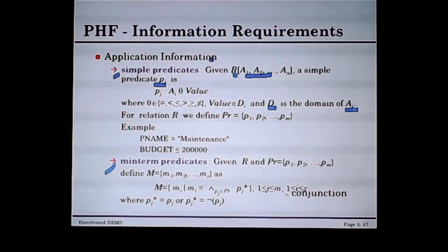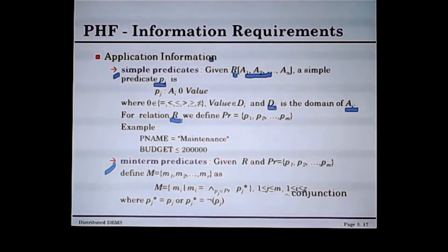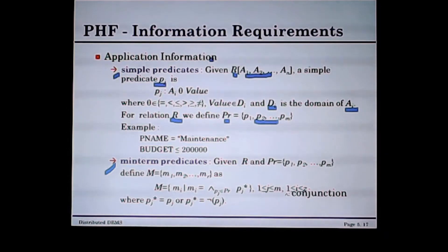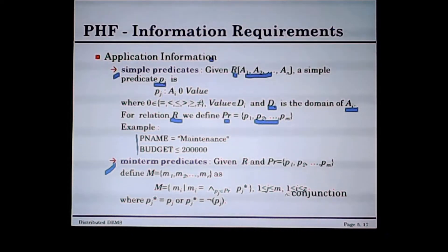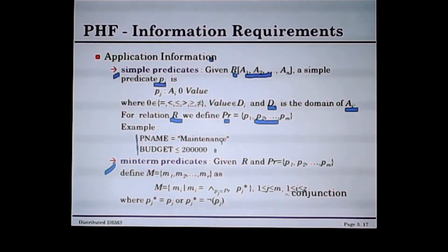Here is an example. For relation R, we define a set PR of M predicates. In the project relation, you have two simple predicates: project name equal 'maintenance', and budget less than or equal to 100,000.